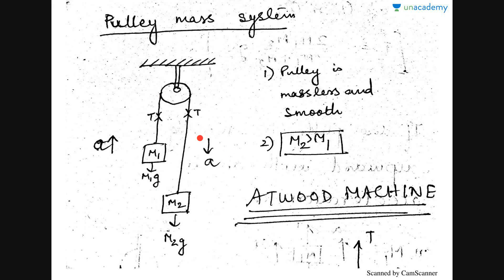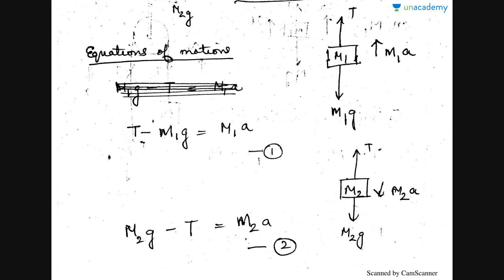The second assumption is that m2 is greater than m1. Since m2 is greater than m1, the pulley will naturally move in the clockwise direction, which is why we have taken the acceleration to be downward. You can also assume the acceleration to be upward — that depends on you. This whole system is also called the Atwood machine. Now we have to see the free body diagram of each of these bodies. A free body diagram depicts all the forces acting on a body.